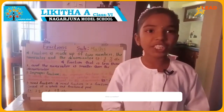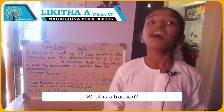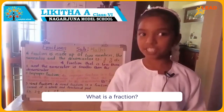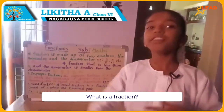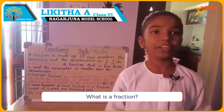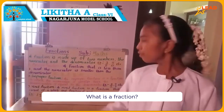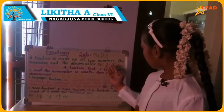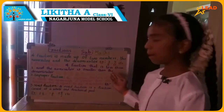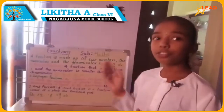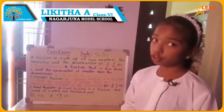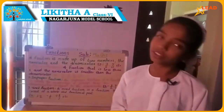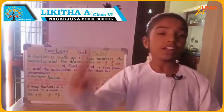First of all, what is a fraction? A fraction is made up of two numbers, the numerator and the denominator. For example, 3 by 6, 5 by 12. Here 3 and 5 are the numerators and 6 and 12 are the denominators.